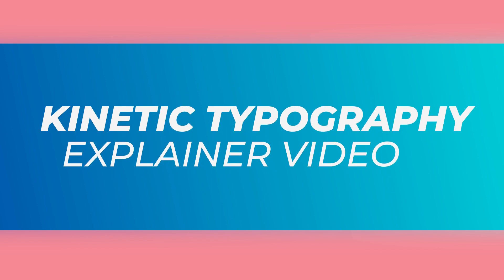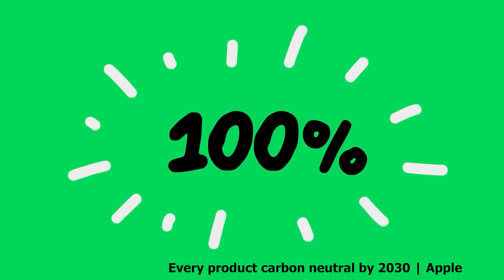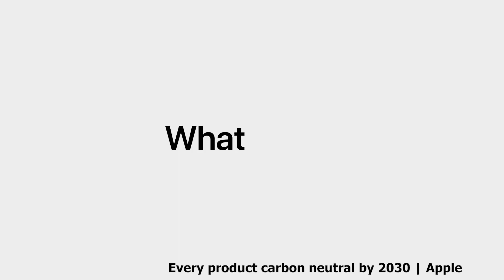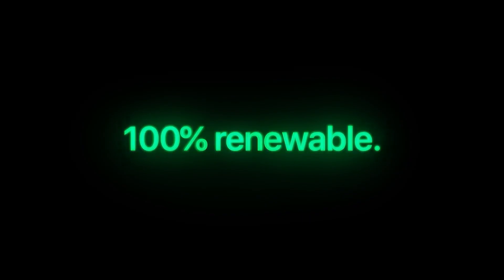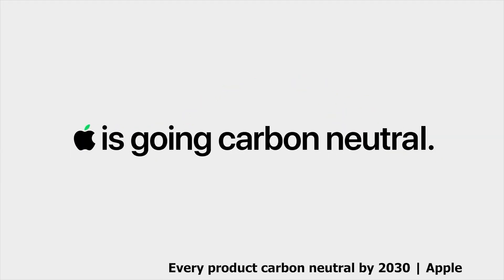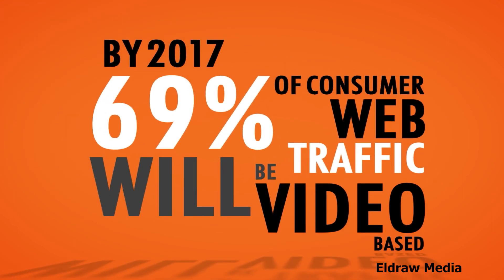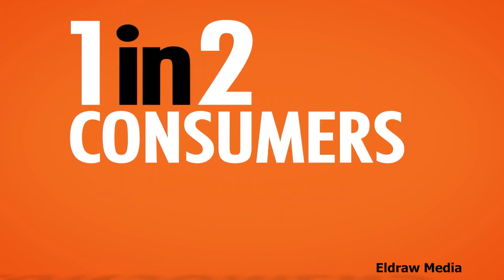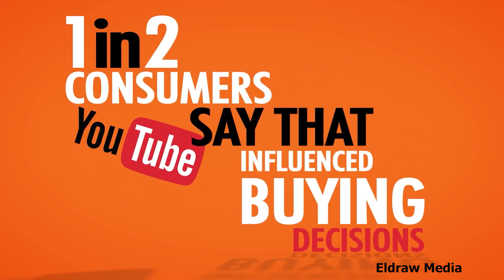Kinetic typography simply means moving text. It's an animation technique that combines text and motion to convey ideas and generate emotional responses from viewers. There are numerous advantages to using kinetic typography in explainer videos, especially if you want to keep your videos relevant in the future. Kinetic typography is a great way to tell your brand's story and sell your services, in addition to capturing the attention of people who prefer soundless viewing.